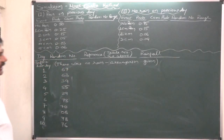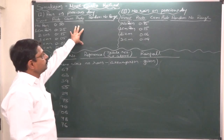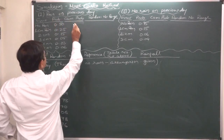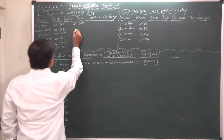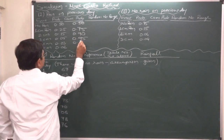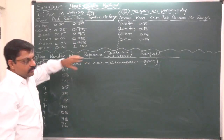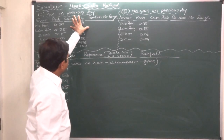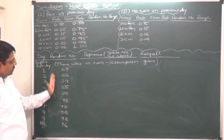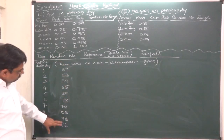First, let's prepare the cumulative probability distribution and determine the random number ranges or intervals — a step common to all simulation problems. For the case where rain occurred on the previous day, cumulative probabilities are: 0.50, 0.75, 0.90, 0.95, 0.98, and 1.00. Treating these as percentage cumulative frequencies, random number ranges are determined since random numbers are one or two digits.